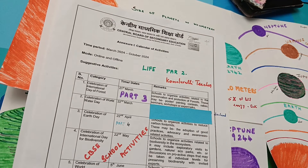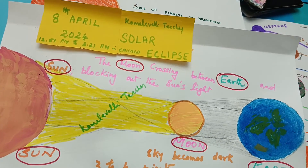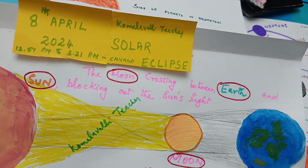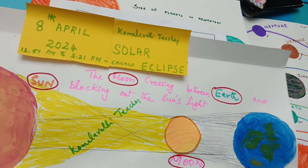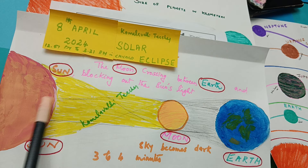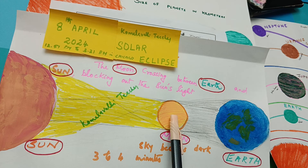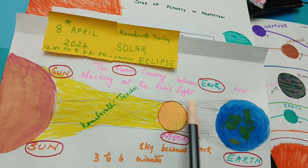Before we look at the solar system, let me show you what I have drawn regarding the solar eclipse. In the USA, the solar eclipse time was from 12:51 PM to 3:21 PM on April 8th, 2024. We saw the solar eclipse with the help of special glasses. A solar eclipse is when the moon crosses between the earth and sun, blocking out the sun's light, so the sky becomes dark and earth is under the shadow of the moon.